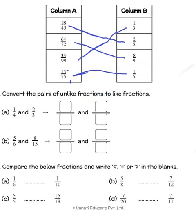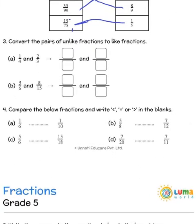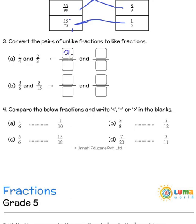The next one is to convert the pairs of unlike fractions to like fractions. Like fractions are those which have a common denominator. Between 4 and 3 we know that 12 is the common multiple. So 4 into what gives you 12? 4 threes are 12, so you multiply the numerator also by 3. So 1 into 3 is 3, and 4 threes are 12.